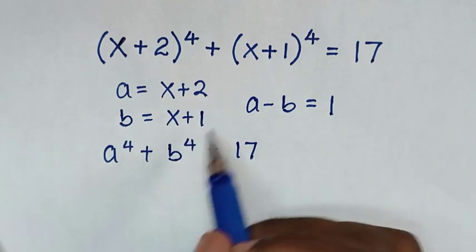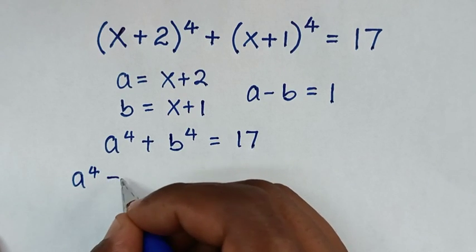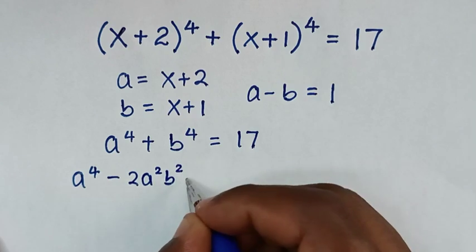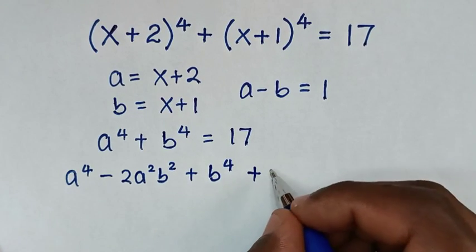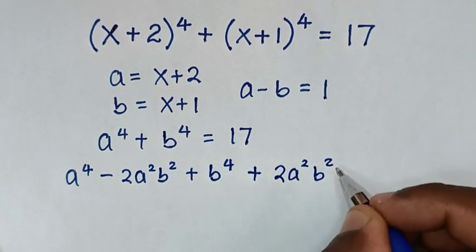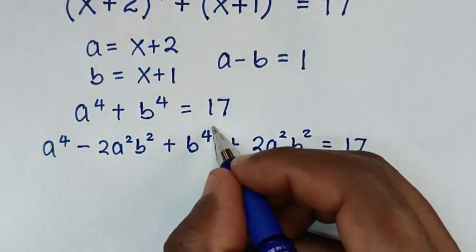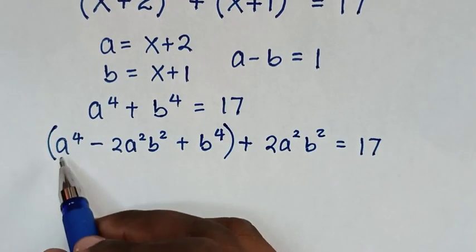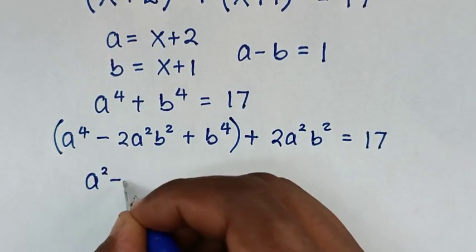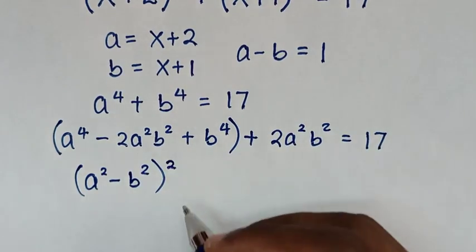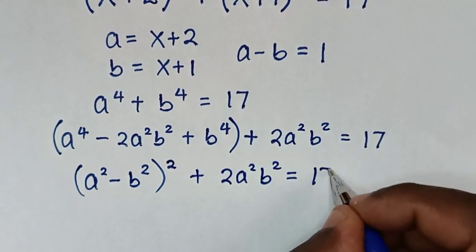From here, a⁴ minus 2a²b² plus b⁴, because we subtracted this we will add back 2a²b², giving (a⁴ - 2a²b² + b⁴) + 2a²b² = 17. We can place this in a bracket: (a² - b²)² + 2a²b² = 17.